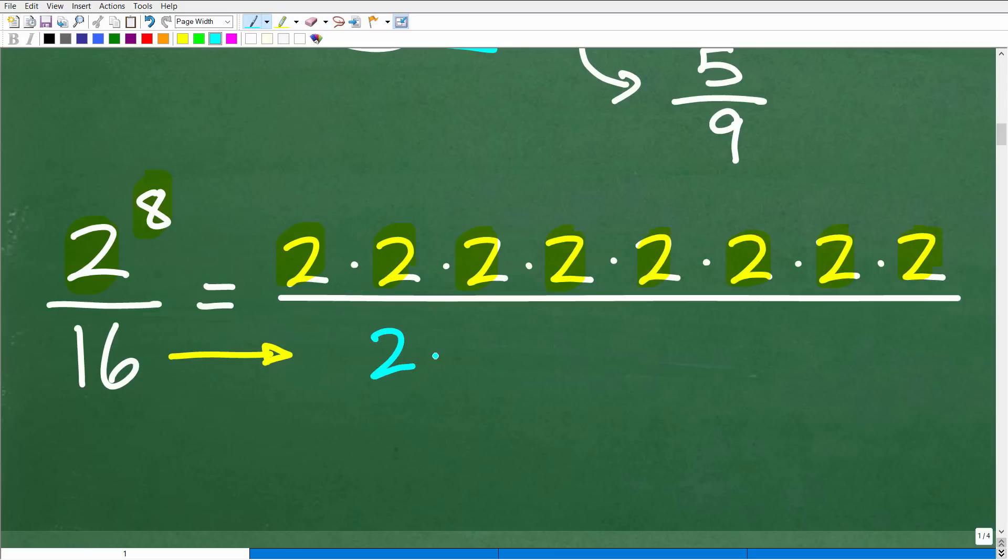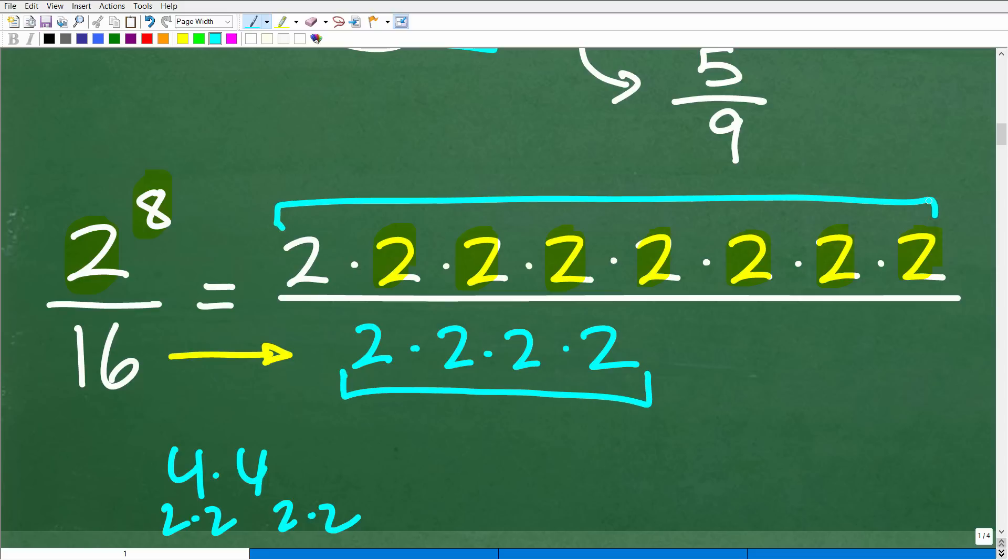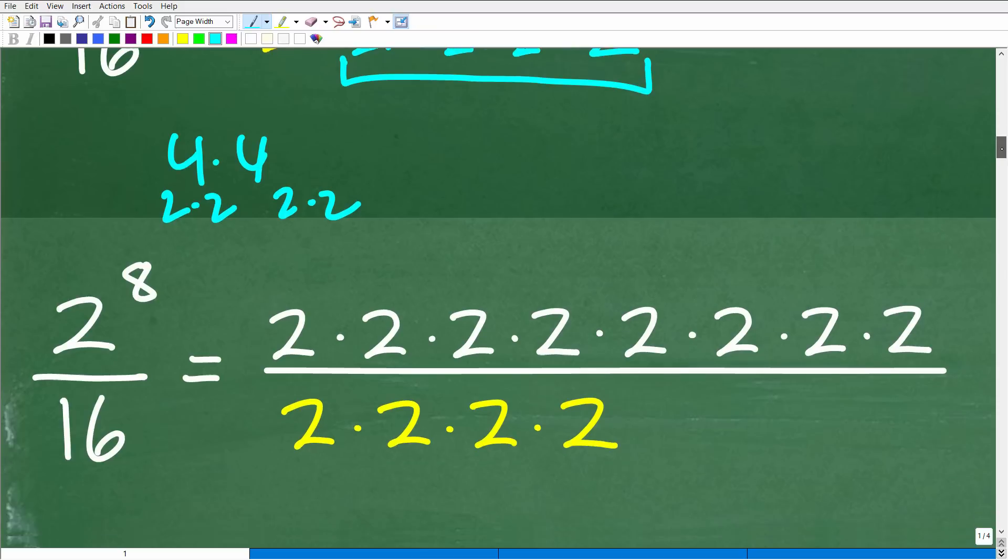But you could also go 2 times 8, right? You're like, well 2 times 8, that's 16. So I've got 2 here, I've got 2 here, I could cross-cancel. But I've still got to deal with this 8. But what you could do is recognize that, you know what, 16, if you said oh that's 4 times 4, and then 4 is 2 times 2, and 4 over here is 2 times 2. Well, 16 really is 2 times 2 times 2 times 2. Well, this is what you want to be thinking, okay? You've got 4 twos down here and you've got 8 twos up here.